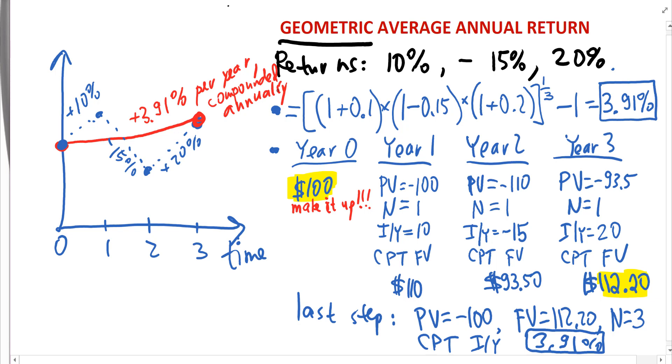With the arithmetic average, you instead say that the return you earn on average every year is so and so percent when the money is invested for just one year. So with the geometric average, it's not a one-year investment. It's a multi-year investment. In our problem, it's a three-year investment.